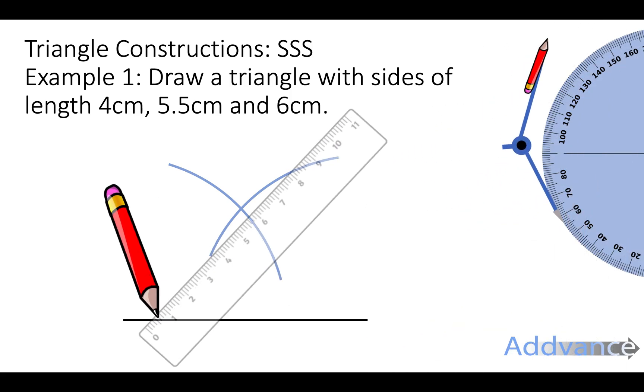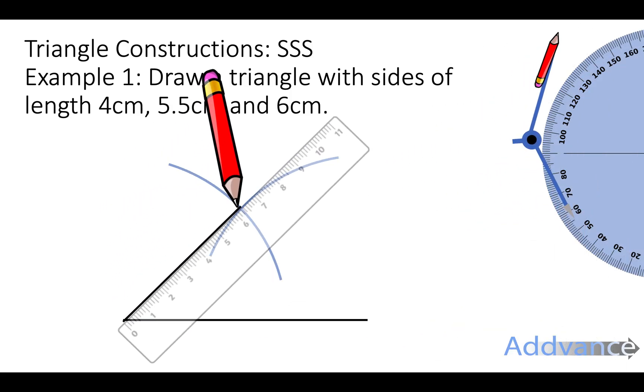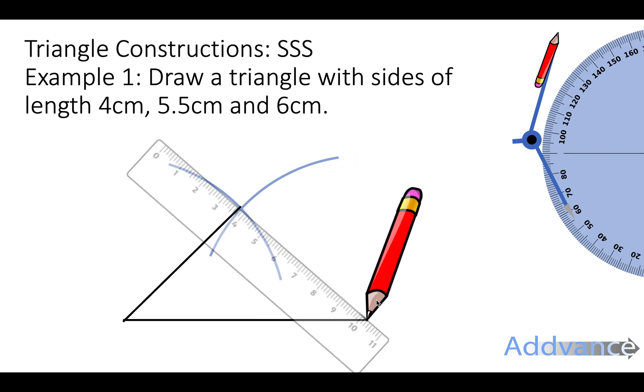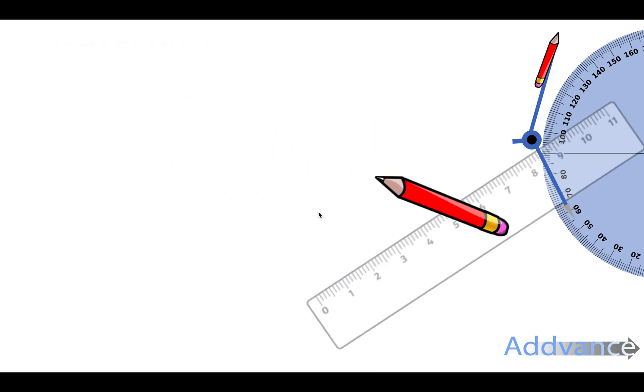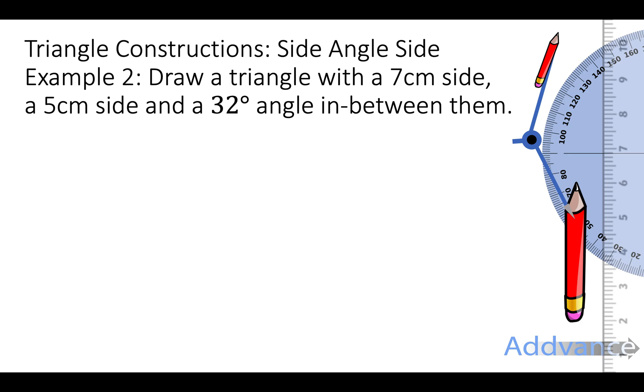So now we take our ruler and pencil and we connect the tip of this line with this cross here and the other tip of the line with this point. Again this is super accurate so be careful and make sure to do this precisely and accurately when you're drawing. When you've done that you can measure the sides of the angle of the triangle just to make sure you've done it correctly.